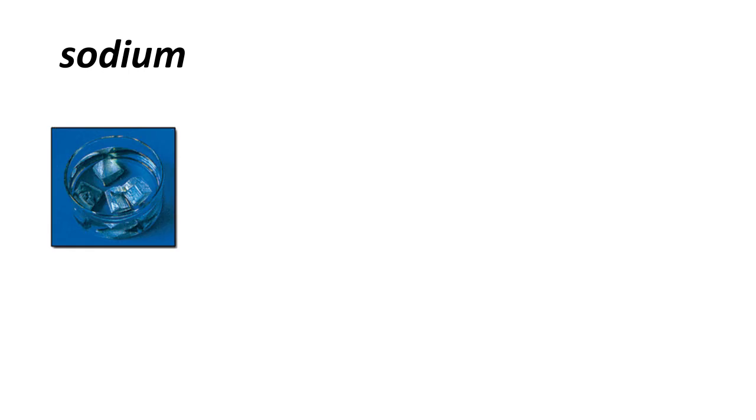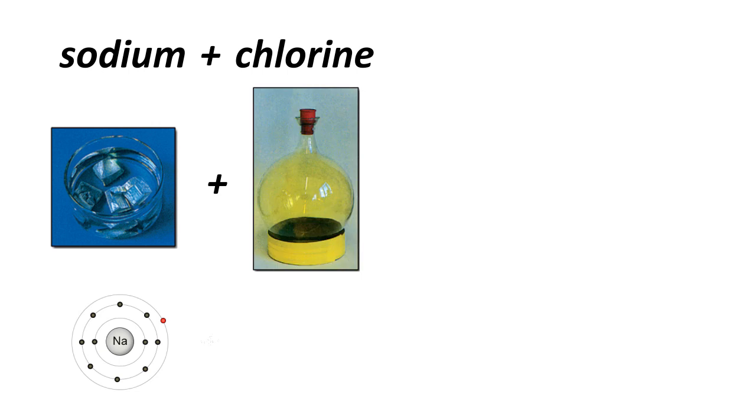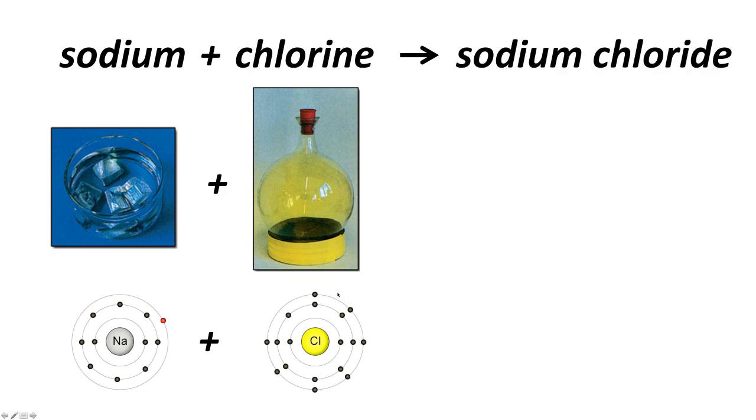Let's look as an example at sodium reacting with another element, chlorine. Sodium is a metal, shiny, soft metal. Its electronic structure looks like this. It has one electron in its outer shell. Chlorine is a poisonous gas, and its electronic structure looks like this. It has seven electrons in its outer shell. If you mix together sodium and chlorine, they make the compound sodium chloride.